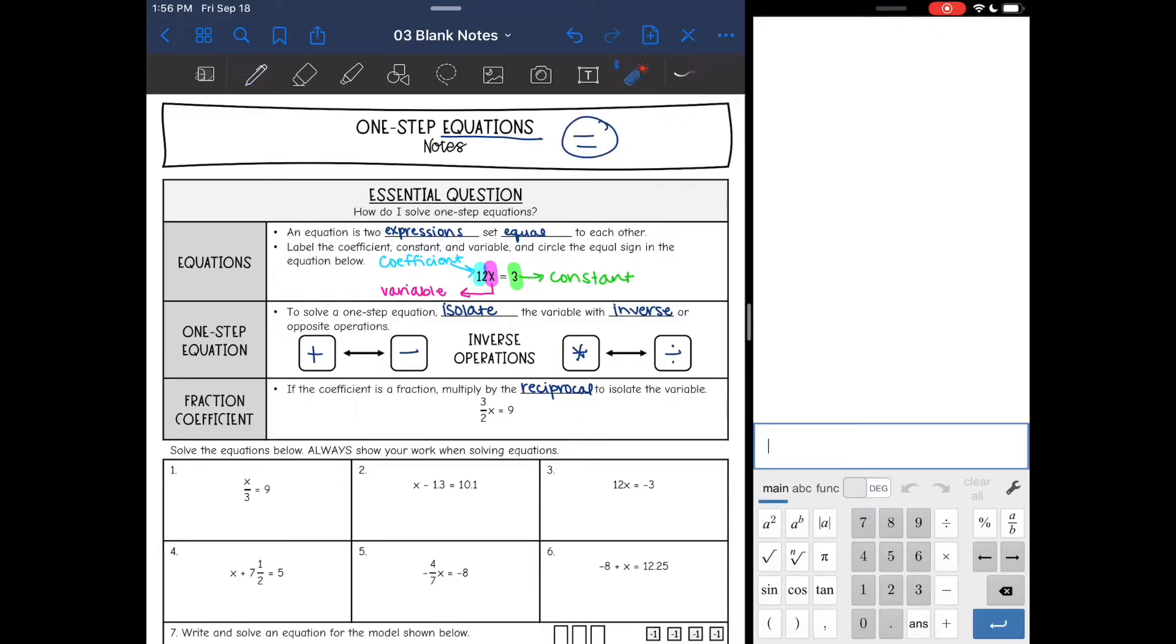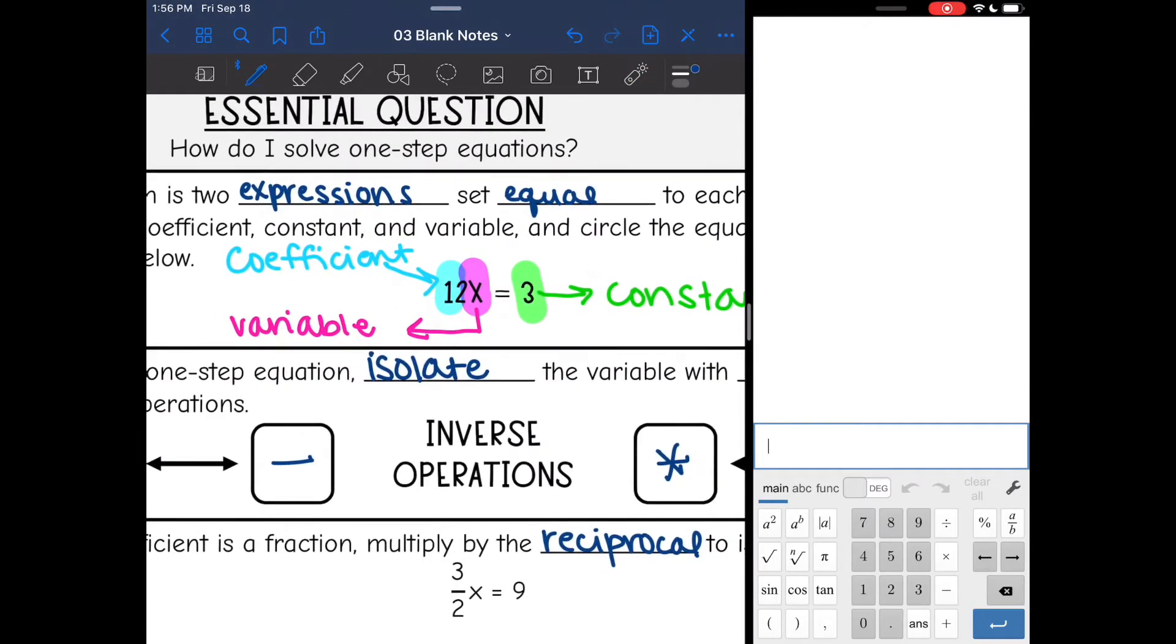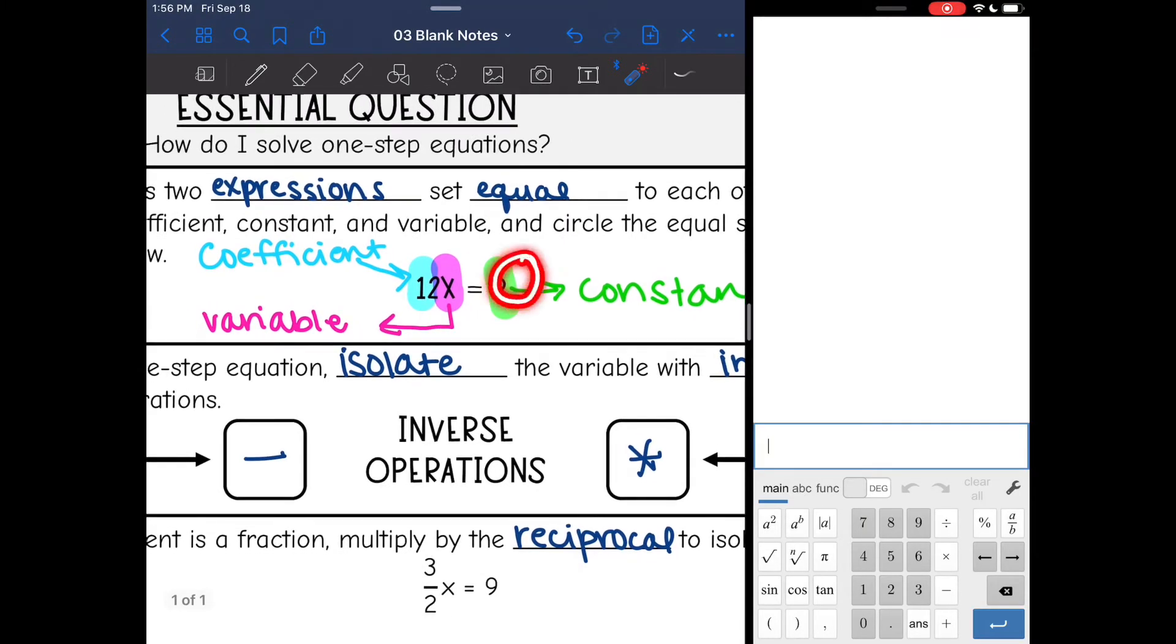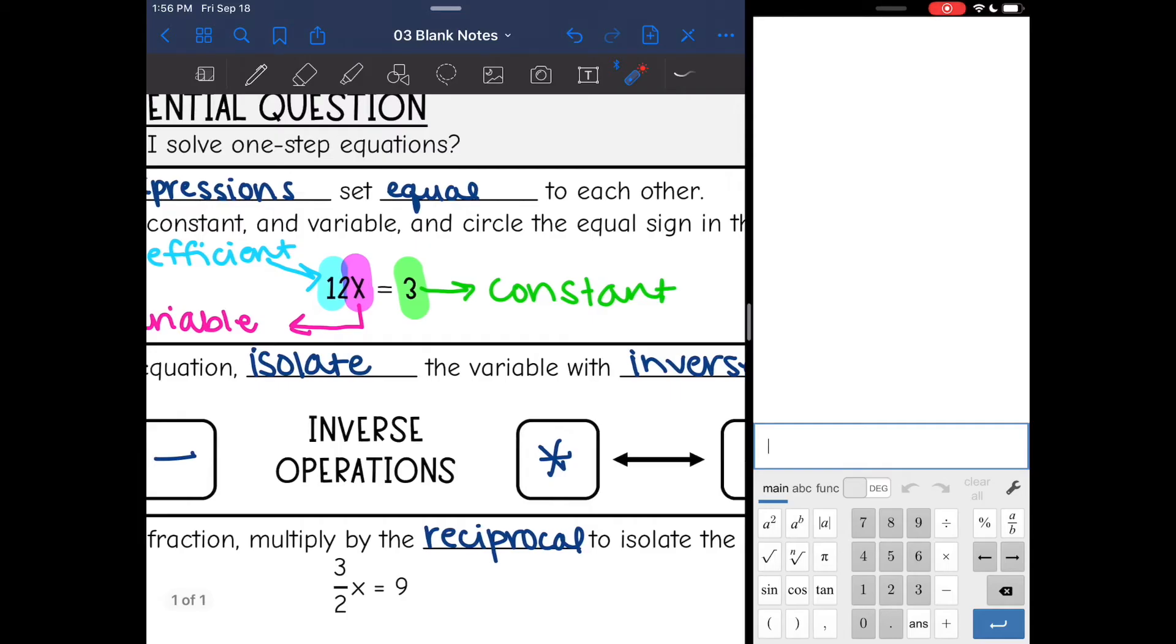So let's talk about what equations are a little bit more. They are two expressions set equal to each other. We want to talk about the coefficient, constant, variable, and then we're going to circle the equal sign. The coefficient is the number in front of the variable. So 12 would be the coefficient here. The variable is the symbol that we are trying to solve for in an equation. And then a number by itself, we call that a constant. And then here is the equal sign.